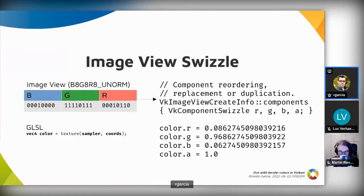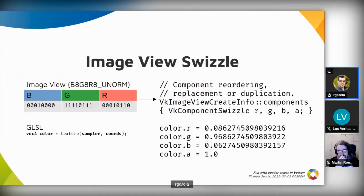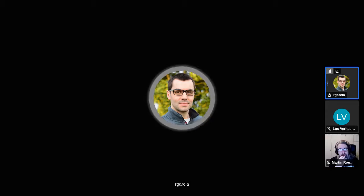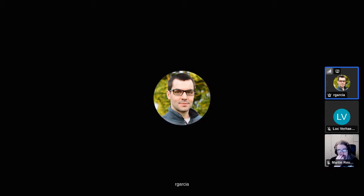It's possible to specify other swizzles — indicating what the resulting final color should be for each of the four components. You can reorder the components arbitrarily, for example saying that the red component should come from the original blue one. You can force some of them to be zero or one. You can also replicate one of the original components in multiple positions of the final color. It's a flexible mechanism for specifying what you want in each of the output components.